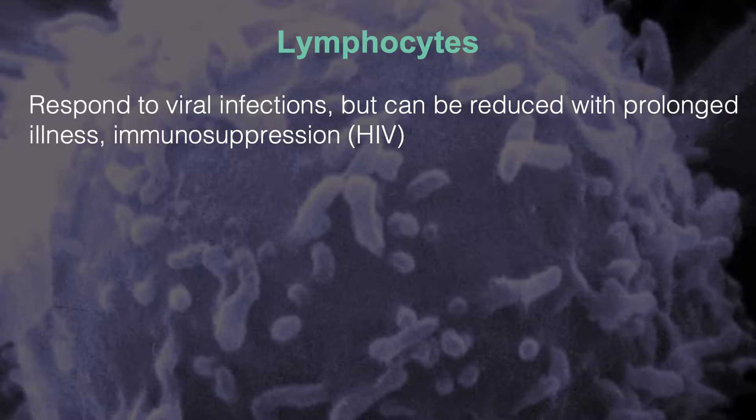Lymphocytes are upregulated or boosted — their function increases with infections. With prolonged illness, they can be reduced. In immunosuppression — HIV, the human immunosuppressive virus — the immune system can be suppressed; specifically, lymphocyte action can be suppressed. But normally, these work to fight off, degrade, or destroy invading pathogens.